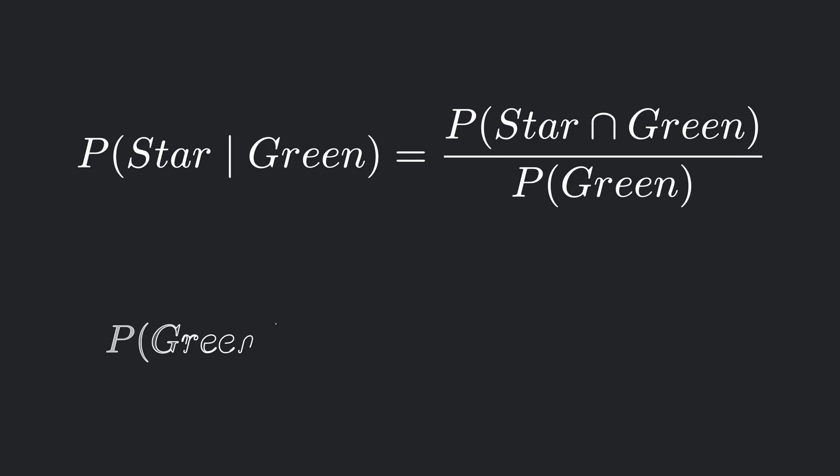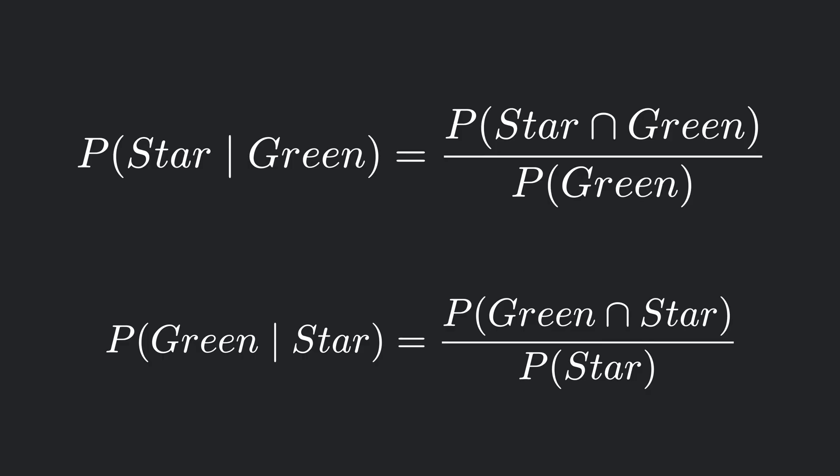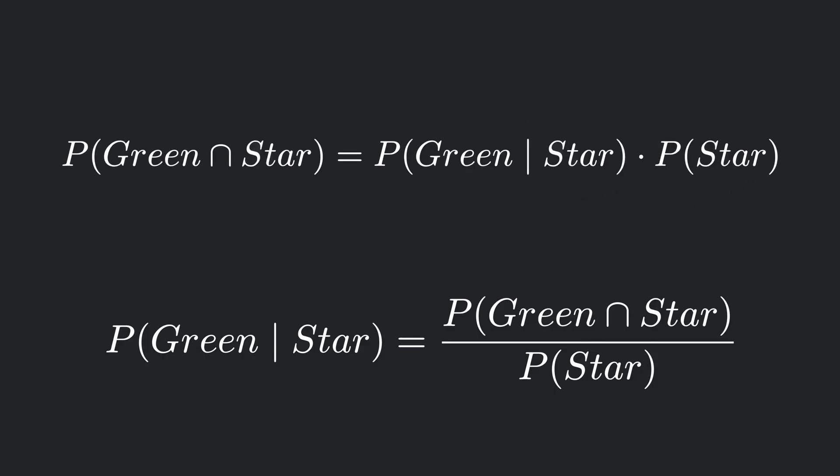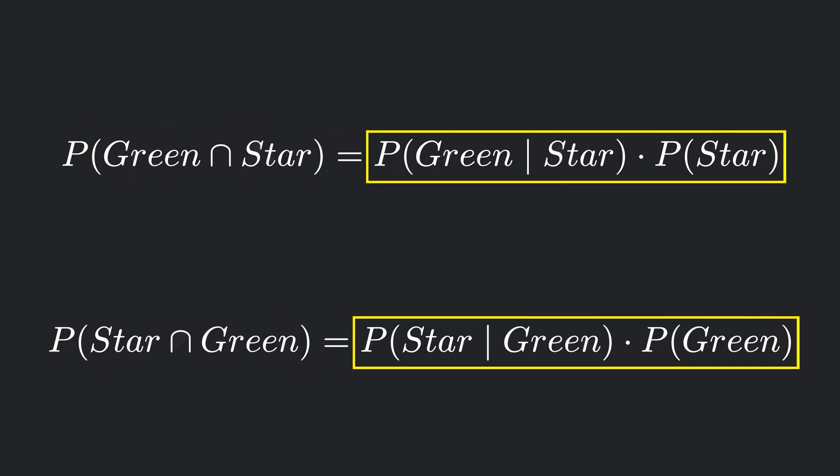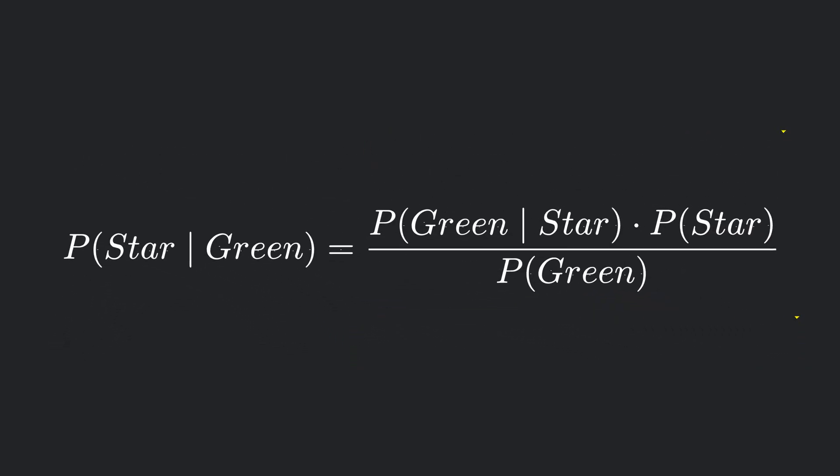We can also reverse this and find the probability of the shape being green given that it's a star. This is the probability of green and star divided by the probability of being a star. Now if we rearrange these equations, it turns out that the probability of being green and star, or being star and green, is equivalent. And from here we can equate these two expressions and find the final expression for the probability of star given that it's green.